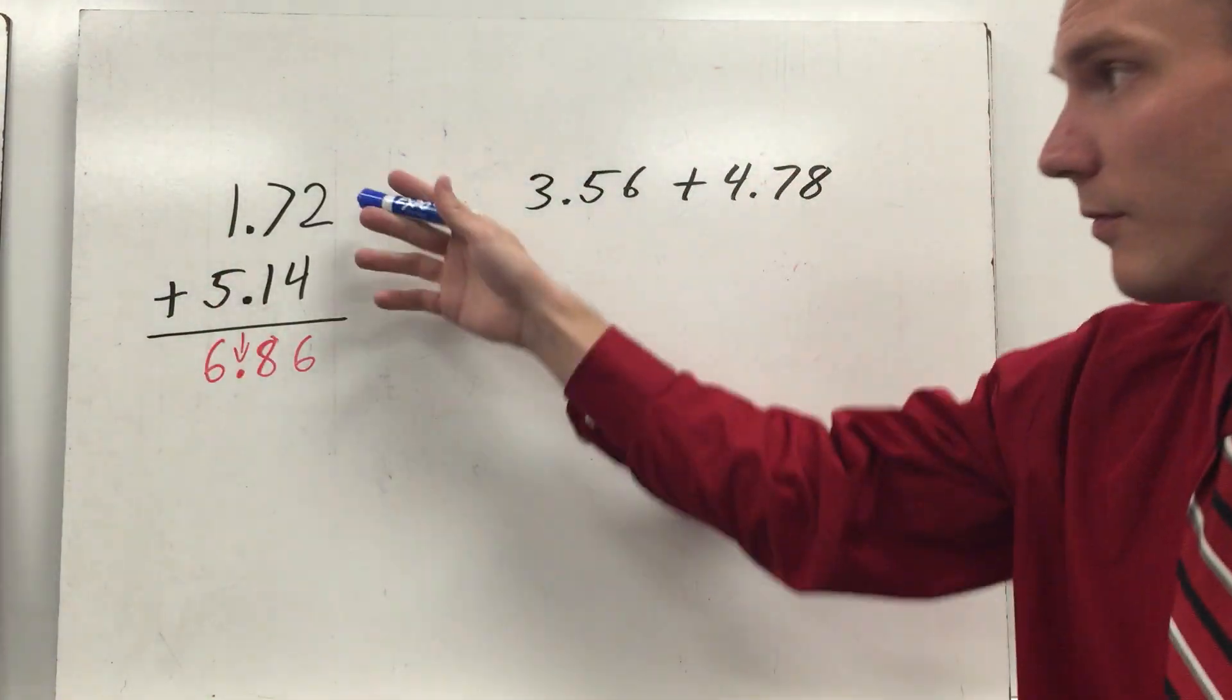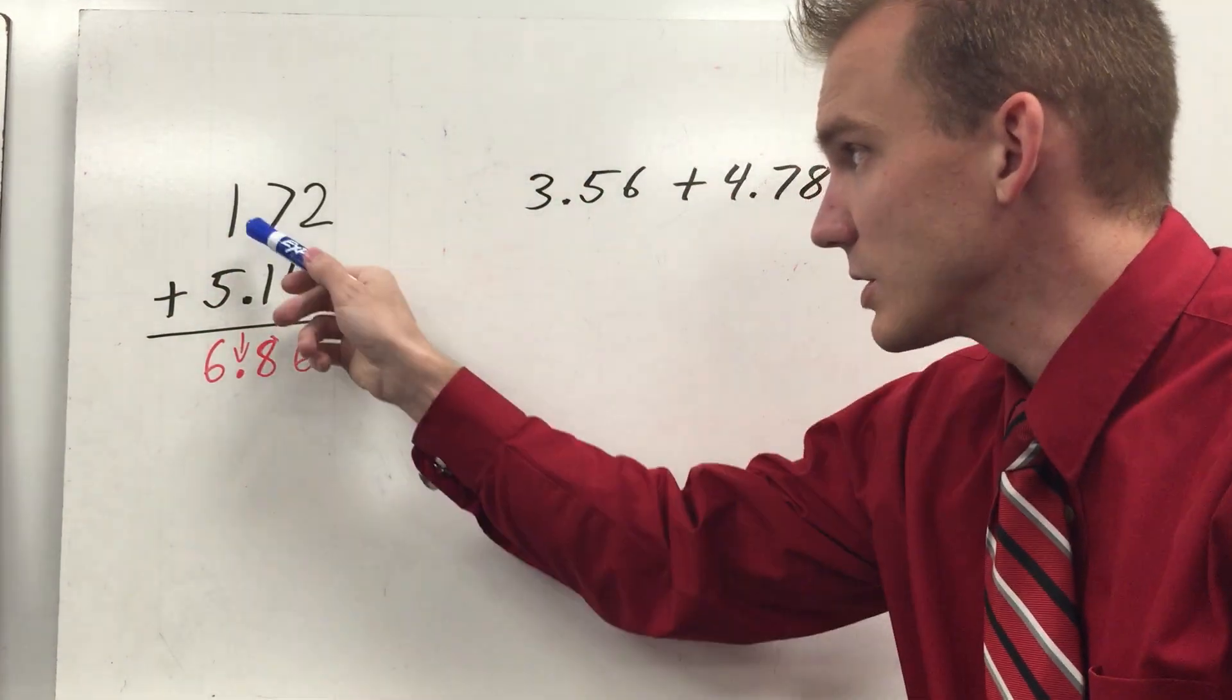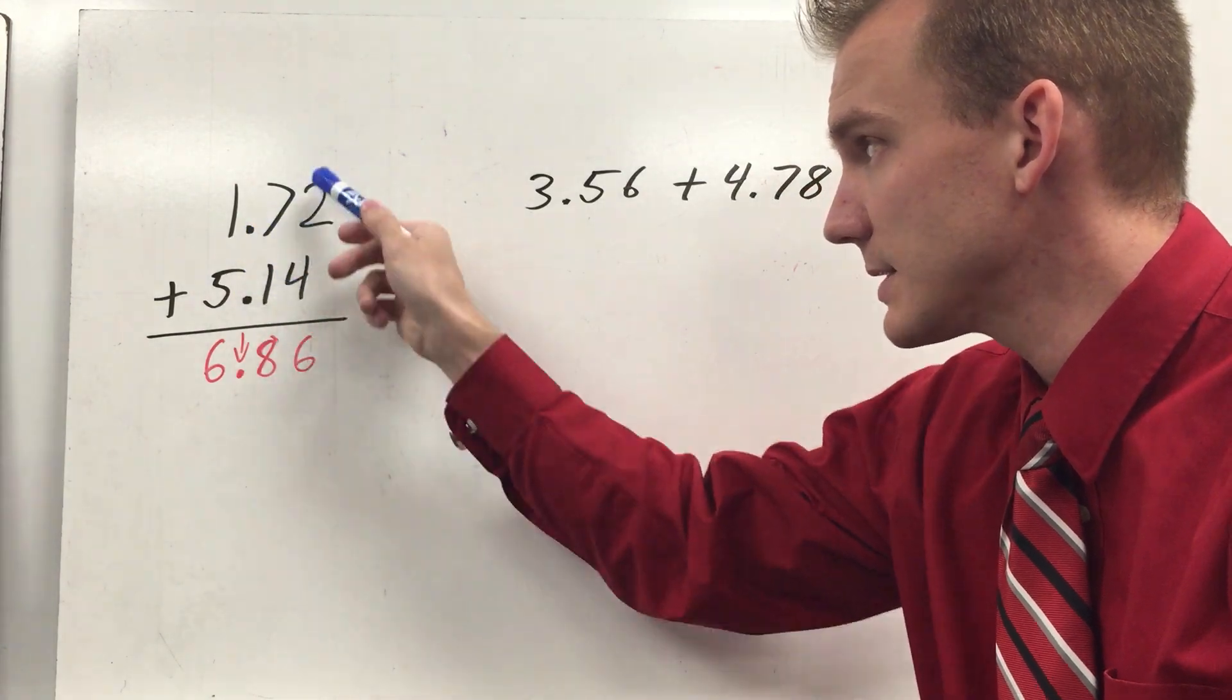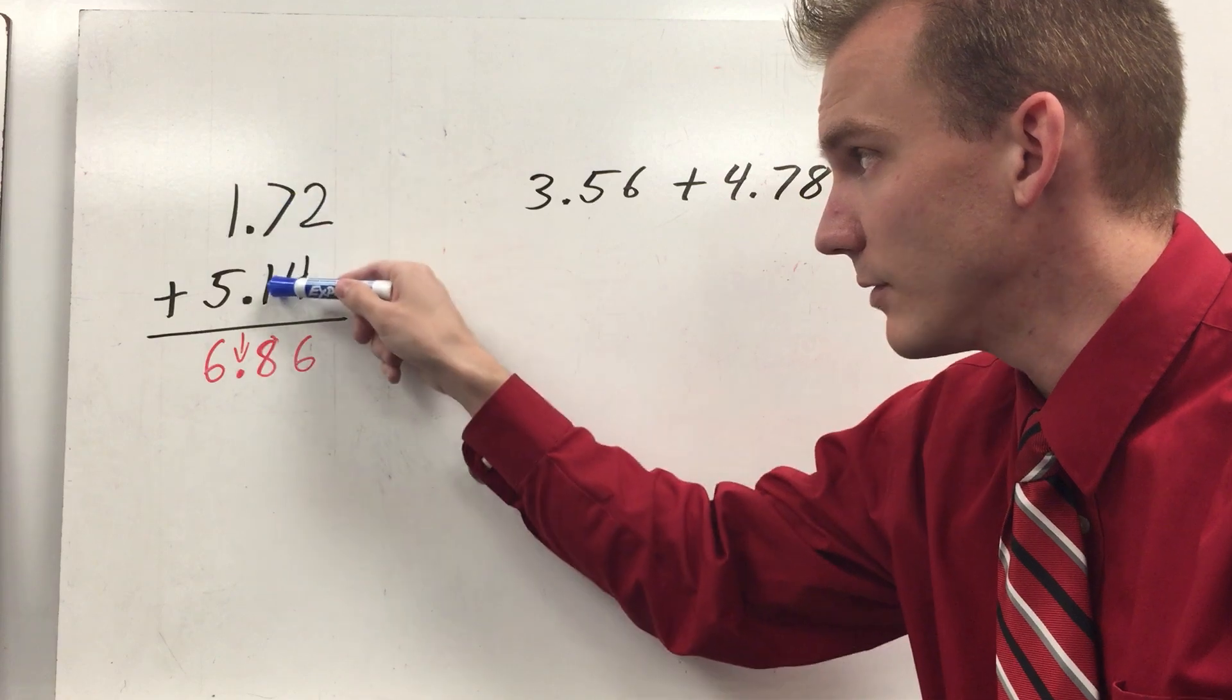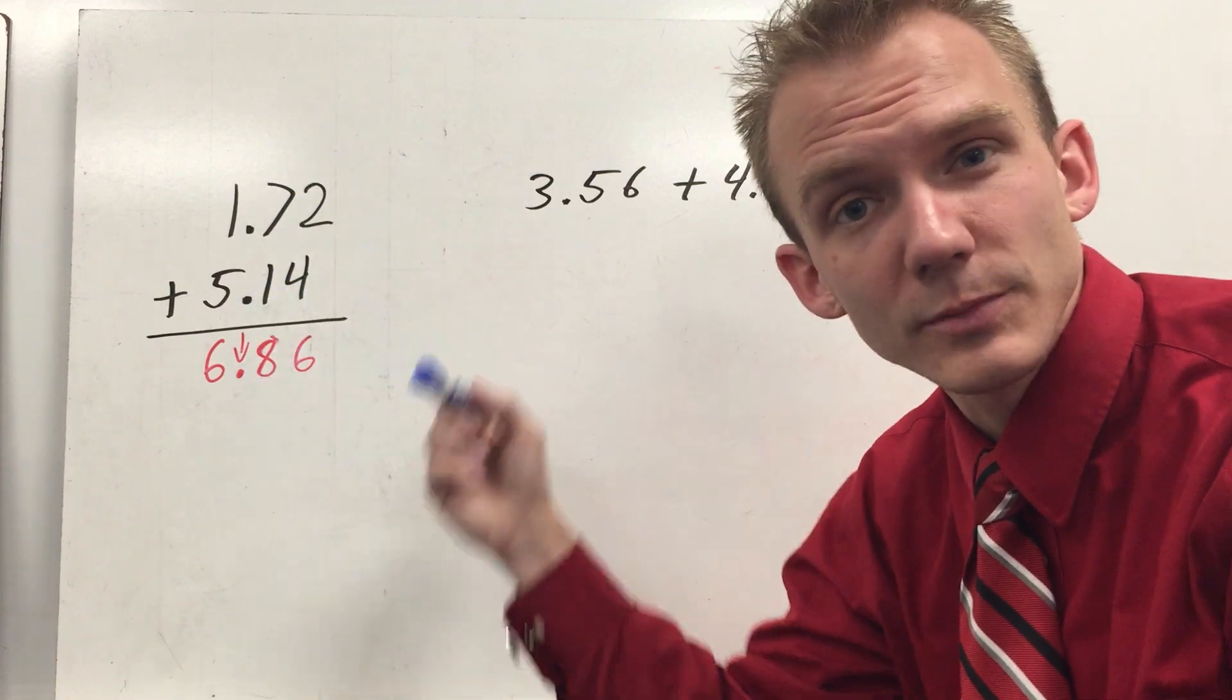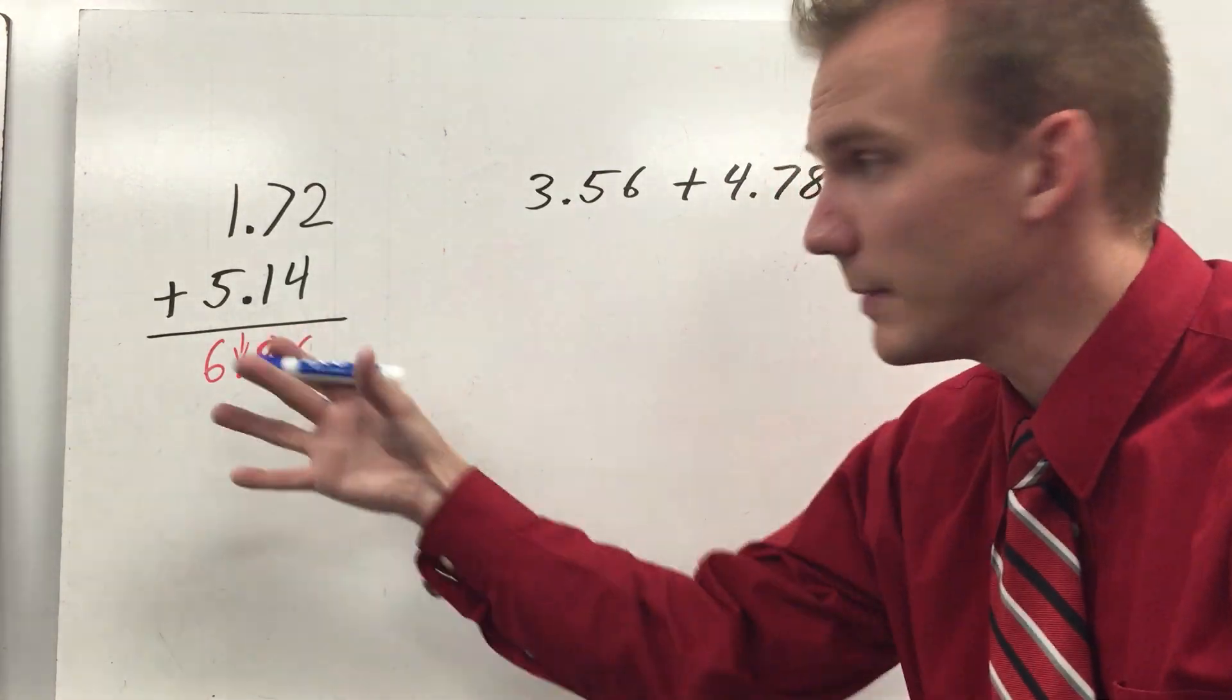So here's an example. You have 1.72 plus 5.14. Notice my decimal points are lined up, so my tenths, my hundredths, and my ones place are all lined up. Two plus four is six. Seven plus one is eight. My decimal point comes straight down. One plus five is six. 6.86 would be my sum.